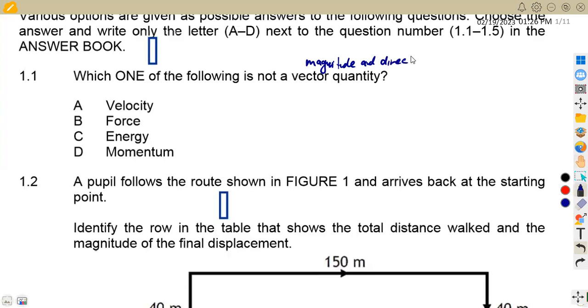Which one of these does not have both magnitude and direction? We've got velocity - remember velocity is a vector because we can say five meters per second north. Force is a vector quantity. We've got energy - if you're referring to energy, it's just 20 kilojoules or 20 joules, there is no direction. So this one is a scalar quantity. Momentum is a vector quantity. So the answer was energy.